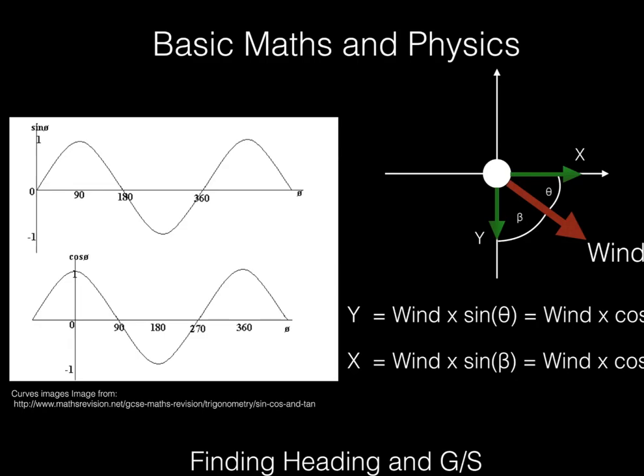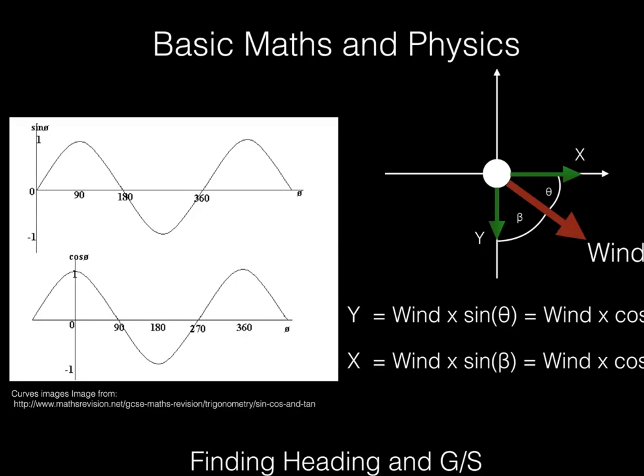You've got sine and cosine. These are curves that allow us to calculate components. And as you can see, the smaller an angle is with the cos, the larger the value will be, and the smaller an angle is with sine, the smaller the value will be. So we can use these, and we come up with these two expressions for y and x, where y and x are the different directions we're using. And I would strongly recommend learning these two formulas: y = Wind × sin(θ) = Wind × cos(β), and x = Wind × sin(β) = Wind × cos(θ). Very, very useful if you are determined to find these answers calculating stuff.